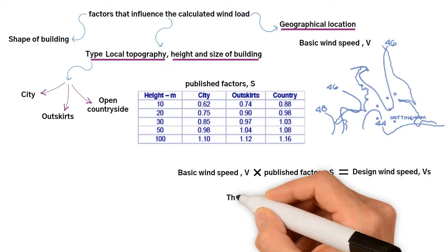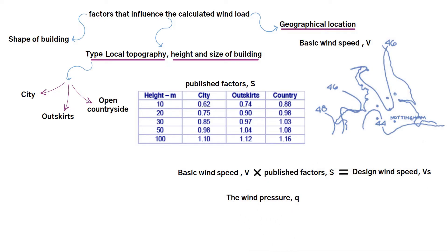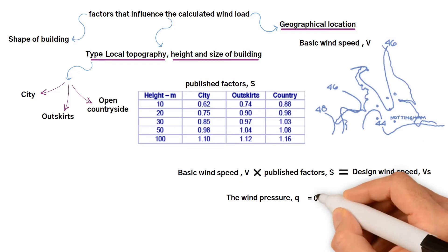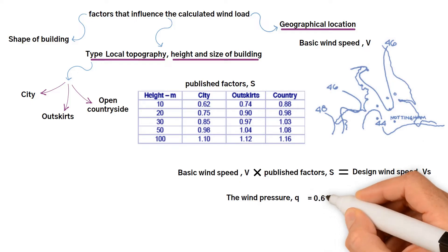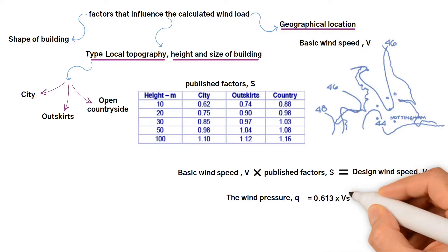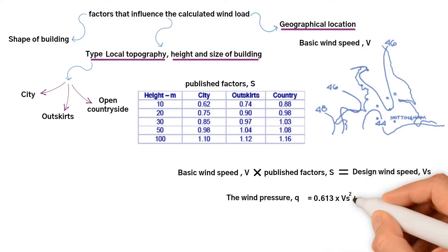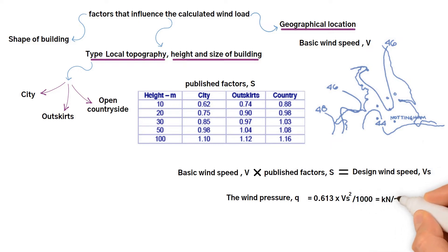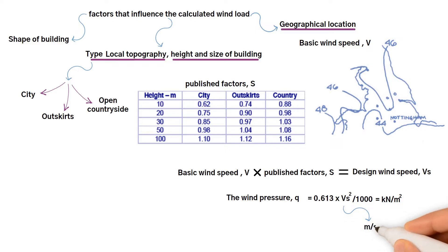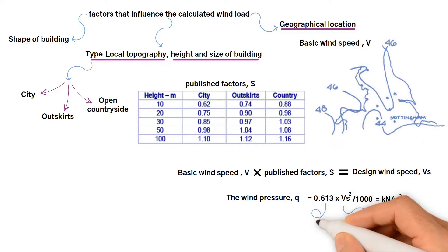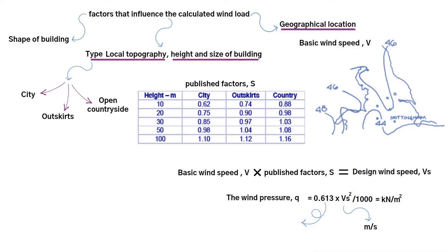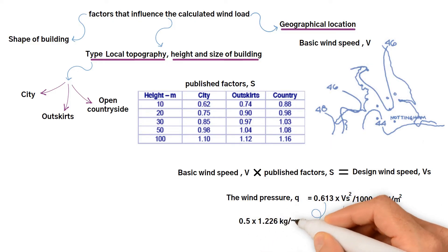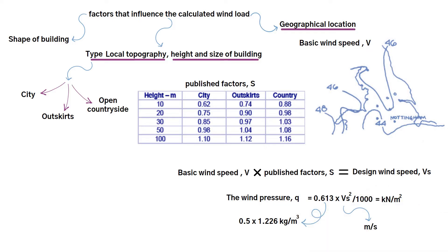The wind pressure is then obtained from this equation, which equals 0.613 times the design wind speed squared divided by 1000. The wind pressure is in kilonewtons per meter squared, the wind speed is in meters per second, and 0.613 is half the density of air in kilograms per meter cubed.